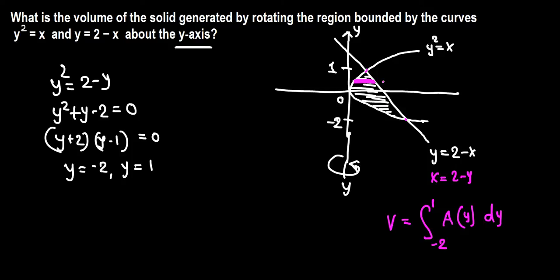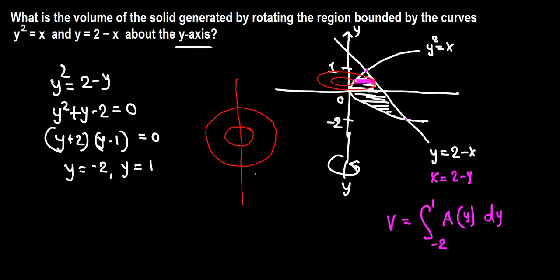To find the area of the sample cross section, we revolve the sample slice about the y-axis and get a washer. We need to find the outer radius R and inner radius r. Don't take the slice at the axis — the inner radius is not zero. Whether we take the slice here or anywhere in the region, we always get a washer.